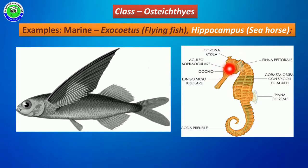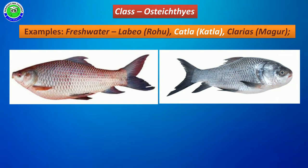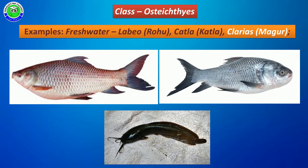Some members grow in freshwater and are edible in nature, like Labeo, commonly called Rohu; Katla, called Katla; and Clarias, also called Magur. These fish belonging to Osteichthyes grow in freshwater habitat and are commercially useful and edible.